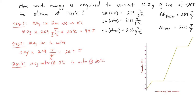Step three: convert 10 grams of water at 0°C to water at 100°C. We take our 10 grams of water, multiply by the specific heat of water (4.184 joules per gram per degree Celsius), and multiply by the temperature change of 100 degrees Celsius. The answer for this step is 4,184 joules.